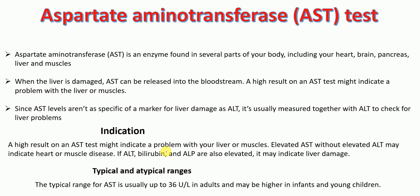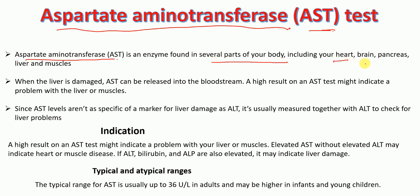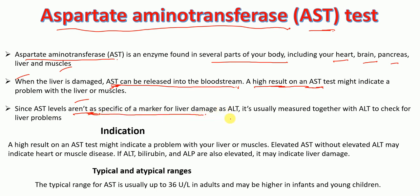The next test to examine liver function is aspartate aminotransferase, or AST test. AST is an enzyme found in several parts of the body, including the heart, brain, pancreas, liver, and muscles. Whenever there is liver damage, AST can be released into the bloodstream, meaning high levels of AST might indicate a problem with the liver or any one of those other organs. Since AST levels are not specific to the liver, it is usually measured together with ALT to check for liver problems.